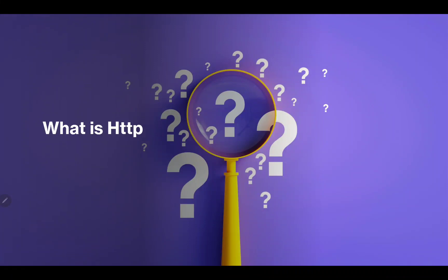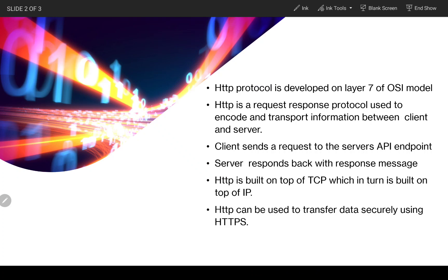Hello everyone. In this video we will talk about the HTTP protocol — what is this protocol and why do we use it. HTTP is developed on layer seven of the OSI model, which is the layer that is exposed to the end user. Basically, whenever we are trying to access any website on a browser, we are directly interacting with layer seven, or the application layer, of the OSI model.